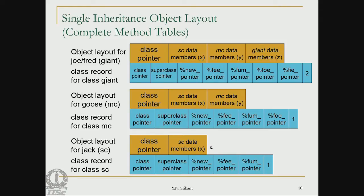The object of type SC will not have information about MC since SC is the super class. The space and offsets for MC data must match between MC and giant objects. Giant-specific data members come at the end — if they were placed first, calling a method from class SC on a giant object would treat giant class data as SC data, which would be incorrect.